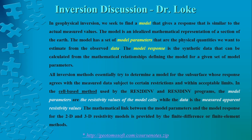We want to find a model, but what is a model? A model is an idealized mathematical representation of a section of the earth, and each model has a set of model parameters that are physical quantities we want to estimate from the observed data. The observed data is what we have measured in the field. The model response is the synthetic data that can be calculated from the mathematical relationships defining the model for a given set of model parameters. All inversion methods are trying to determine a model whose response agrees with the measured data in the field.